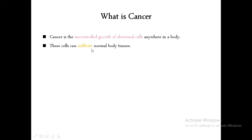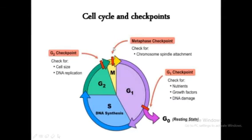Let's start with a very basic introduction — what is cancer? We all know that cancer is the uncontrolled growth of abnormal cells anywhere in a body. These cells can infiltrate or penetrate normal body tissues. For better understanding of the mechanism of cancer, we need to recall the cell cycle.